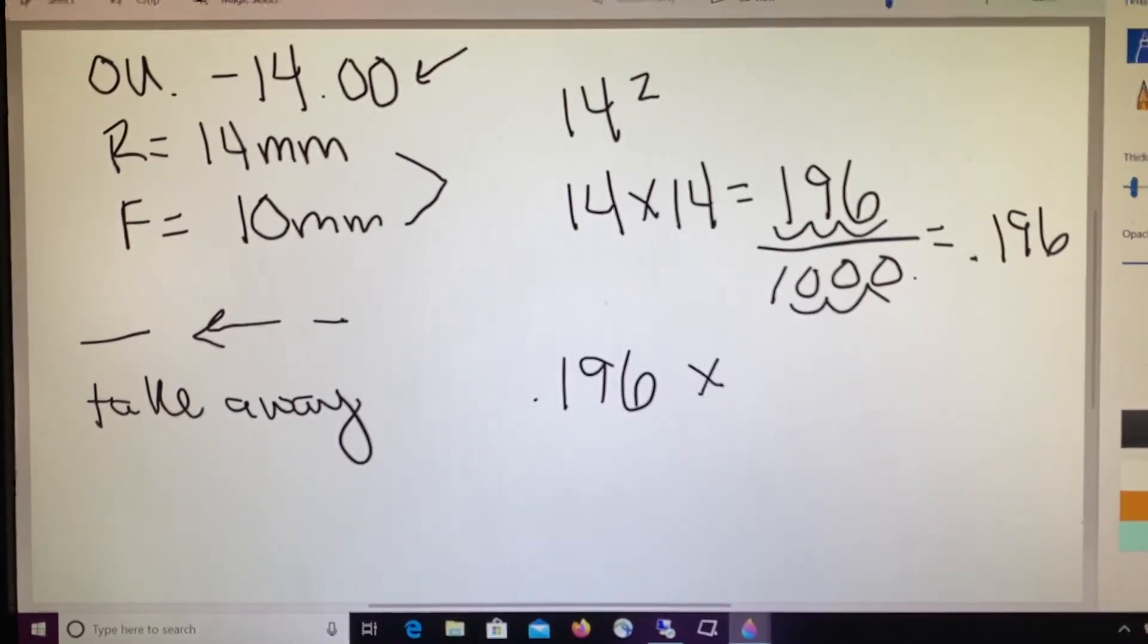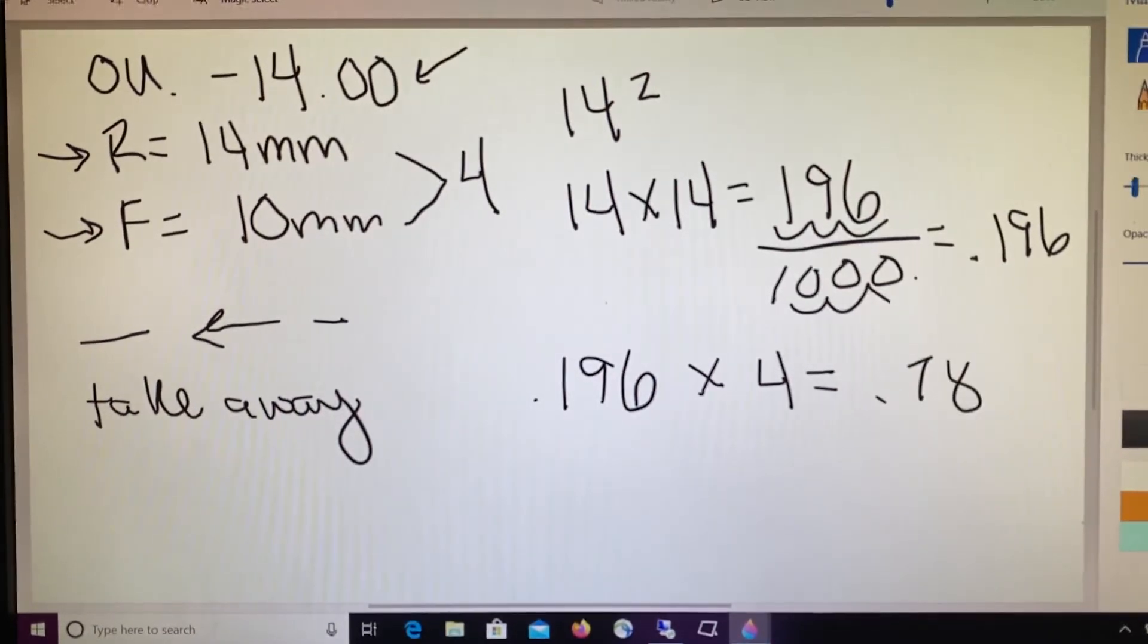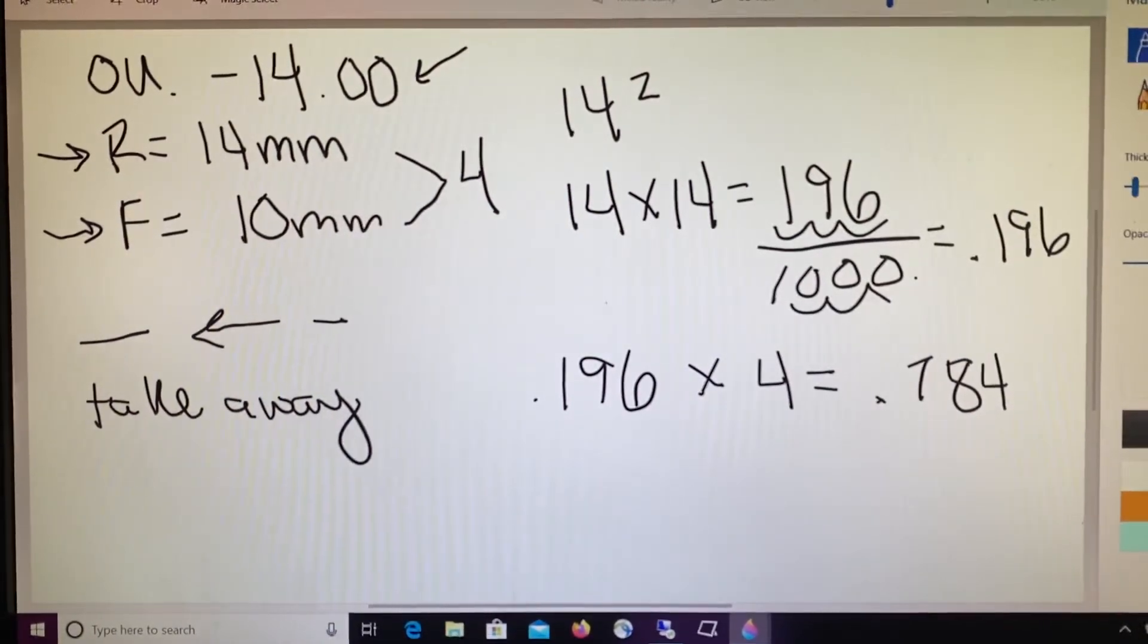We then take that number, 0.196, and multiply it by the difference between how the glasses were refracted and how they sit on our patient. 0.196 times 4 is going to tell us how much change we need to make. We end up with 7.784, which doesn't look like a prescription we're used to dealing with.